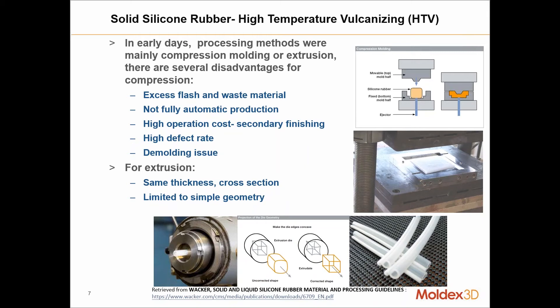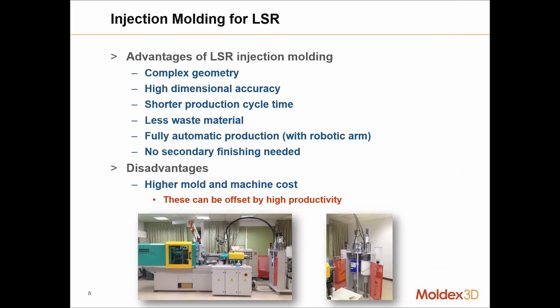When you talk about solid silicone rubber or the high temperature vulcanizing HTV process, earlier there were only two main processes: either compression molding or extrusion for molding this material. When it comes to compression molding, there are a few disadvantages — excessive flash or too much material being wasted, secondary finishing being required which adds to operational costs, and high defect rates. When it comes to extrusion, some limitations are that the overall cross-section has the same thickness, and varying thicknesses is not really easy with extrusion.